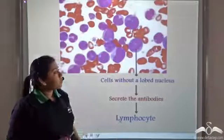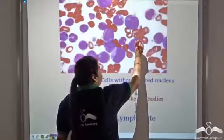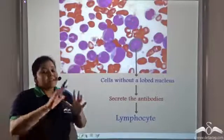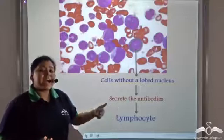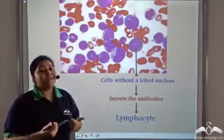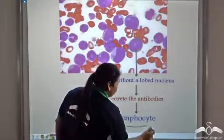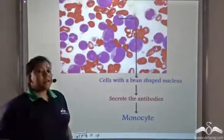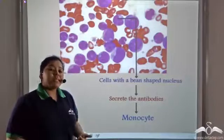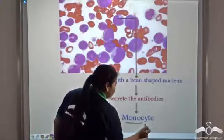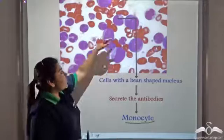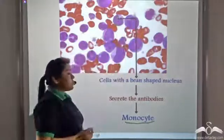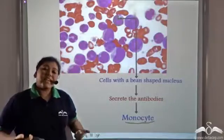White blood cells that do not have a lobed nucleus — the nucleus is spherical — secrete antibodies. These cells are known as lymphocytes. Another form of white blood cell found in the body is known as monocytes. Monocytes have a kidney bean shaped nucleus, and these monocytes can also secrete antibodies.